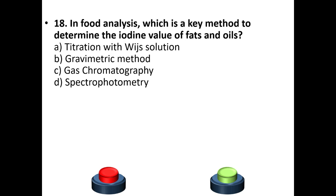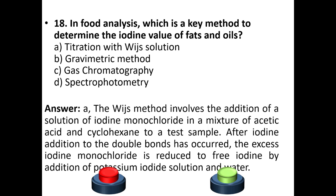Eighteenth question: In food analysis, which is a key method to determine the iodine value of fats and oils? A. Titration with Wijs solution, B. Gravimetric method, C. Gas chromatography, D. Spectrophotometry. The answer is option A: Titration with Wijs solution. The Wijs method involves adding a solution of iodine monochloride in a mixture of acetic acid and cyclohexane to a test sample. After iodine addition to the double bonds has occurred, the excess iodine monochloride is reduced to free iodine by addition of potassium iodide solution and water.